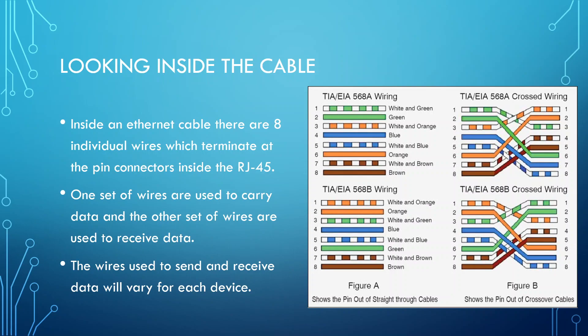With Ethernet, one set of wires is used to carry data and the other set is used to receive data. Think of it like lanes on a motorway — we have multiple lanes and traffic. The first set of lanes has traffic going in one direction and the next set going in the other direction, say north and south. That's the same principle Ethernet works on: when we're transmitting data over these individual wires, data can only ever go in one direction. We can't have data on those same wires coming from the opposite direction, because — like driving on a motorway — there will be a collision. The wires used to send and receive data will vary for each device depending on which device it is.